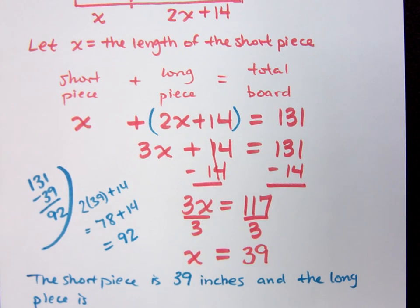It better be the same. It has to be the same. So the short piece is 39 inches, and the long piece is 92 inches.